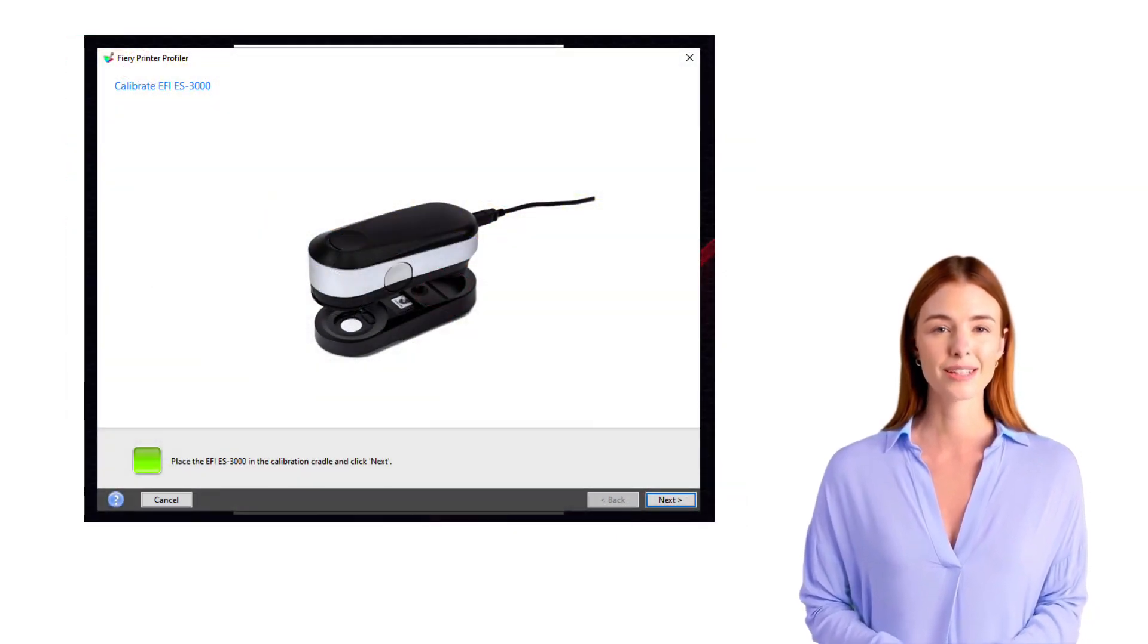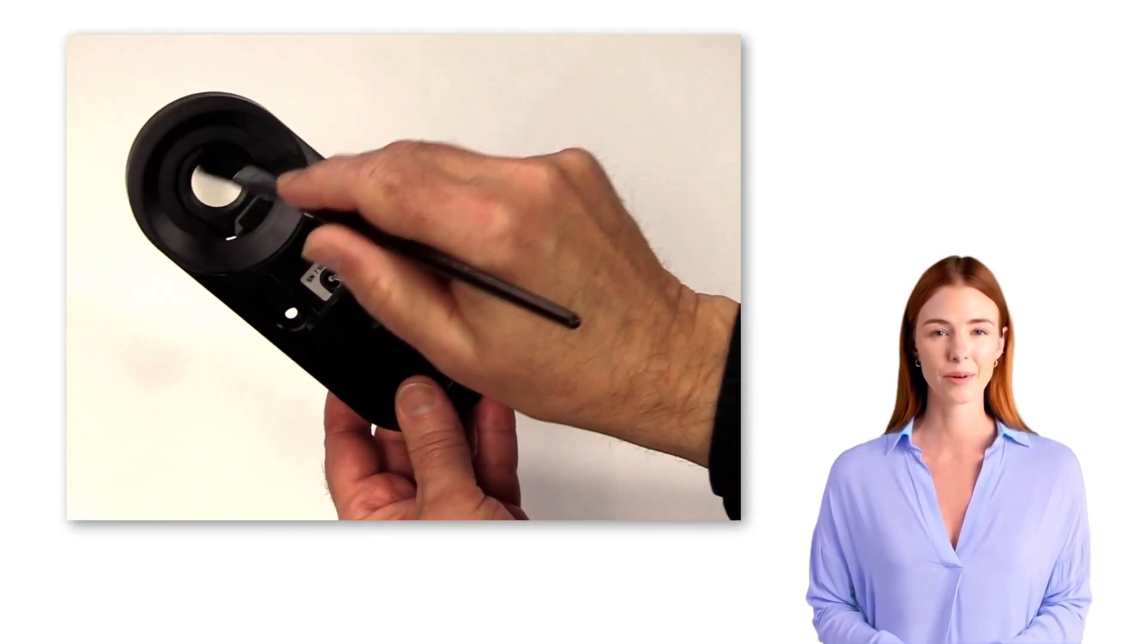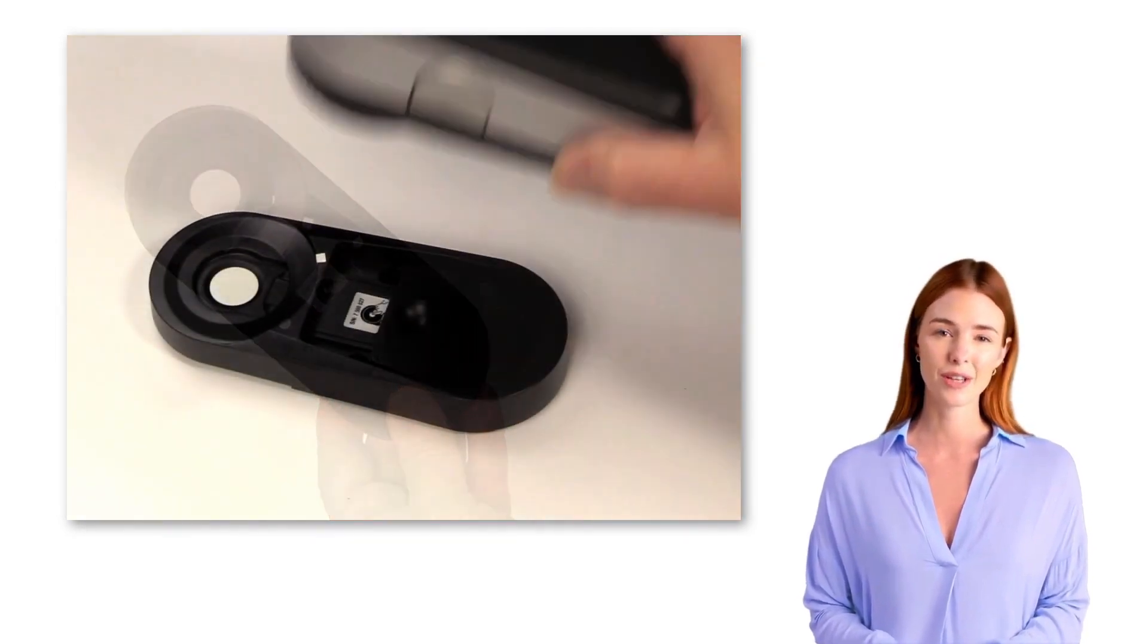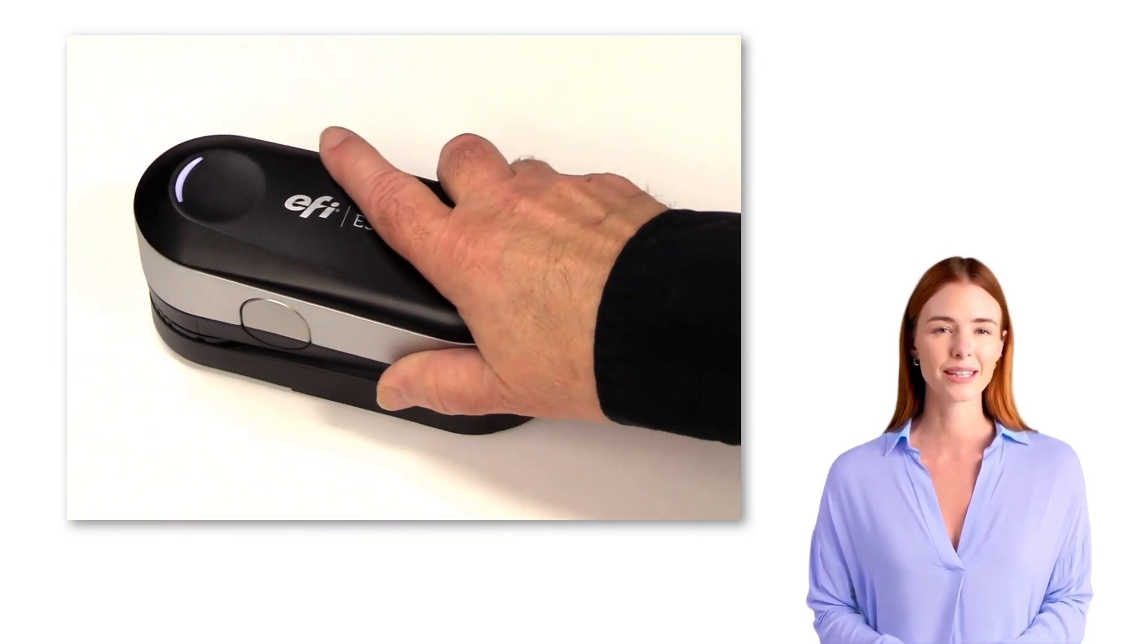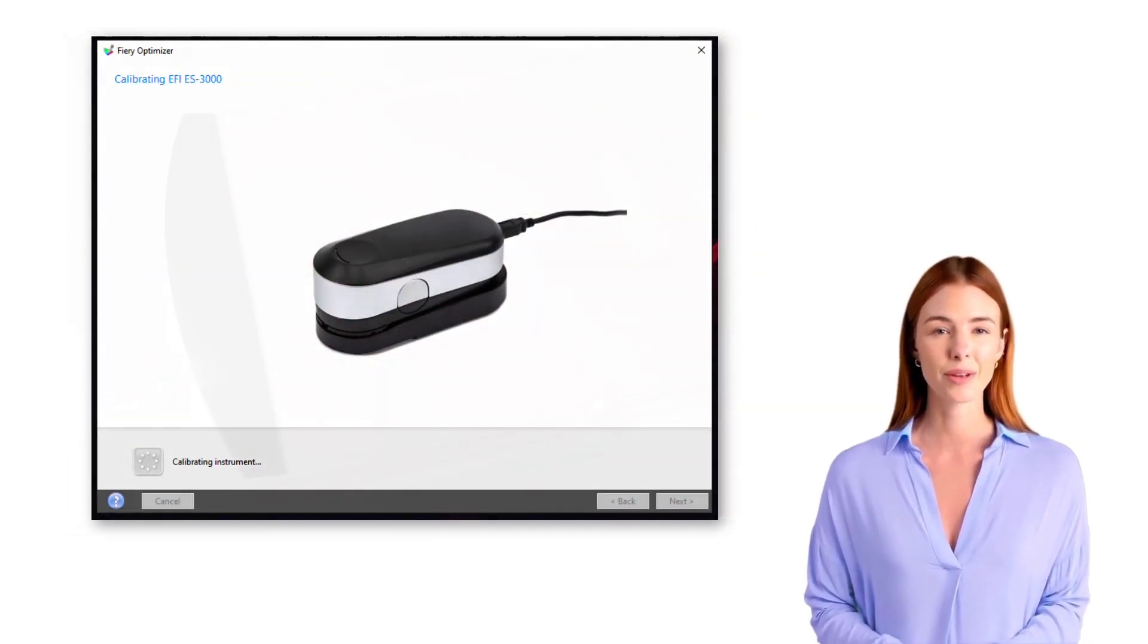To begin the measuring process, when prompted by your Fiery interface, you will need to calibrate your instrument. Ensure that the white calibration tile in the calibration holder is clean and dust-free. Place your instrument in the holder and make certain that it is firmly in position. Then use your Fiery interface to calibrate the device.